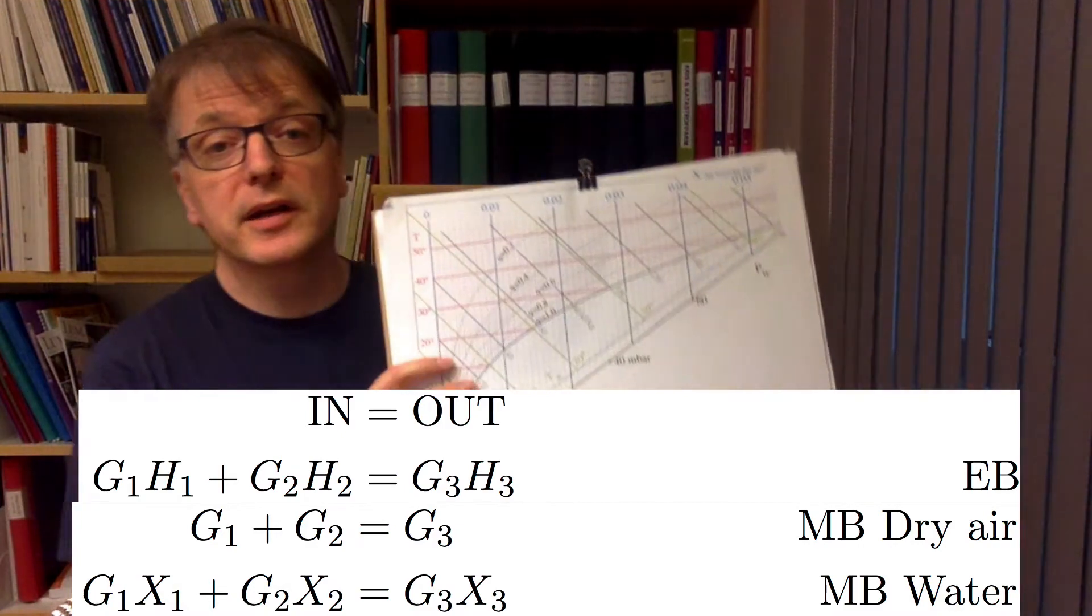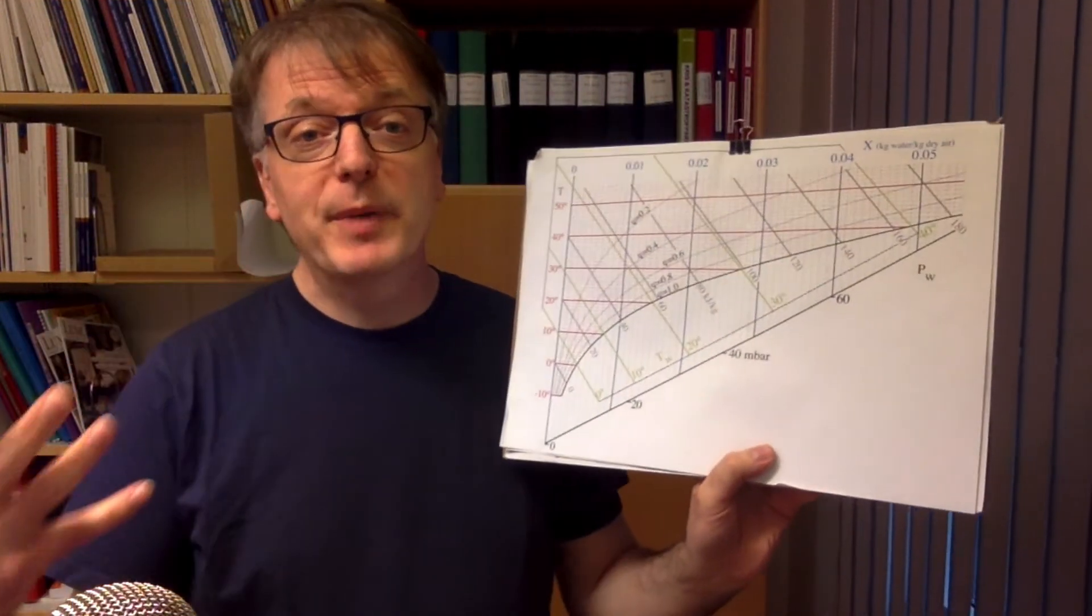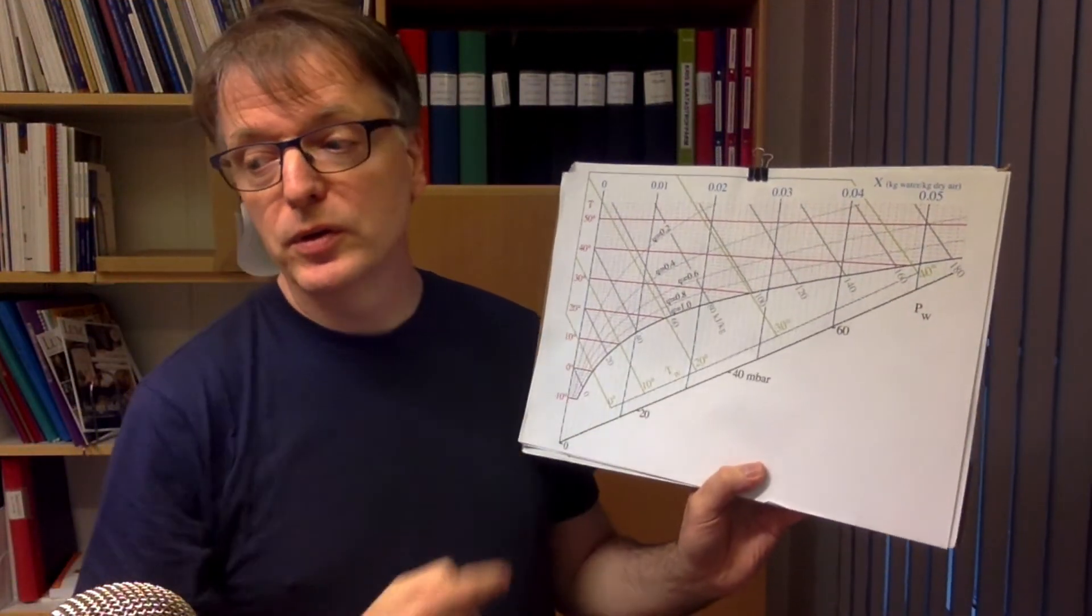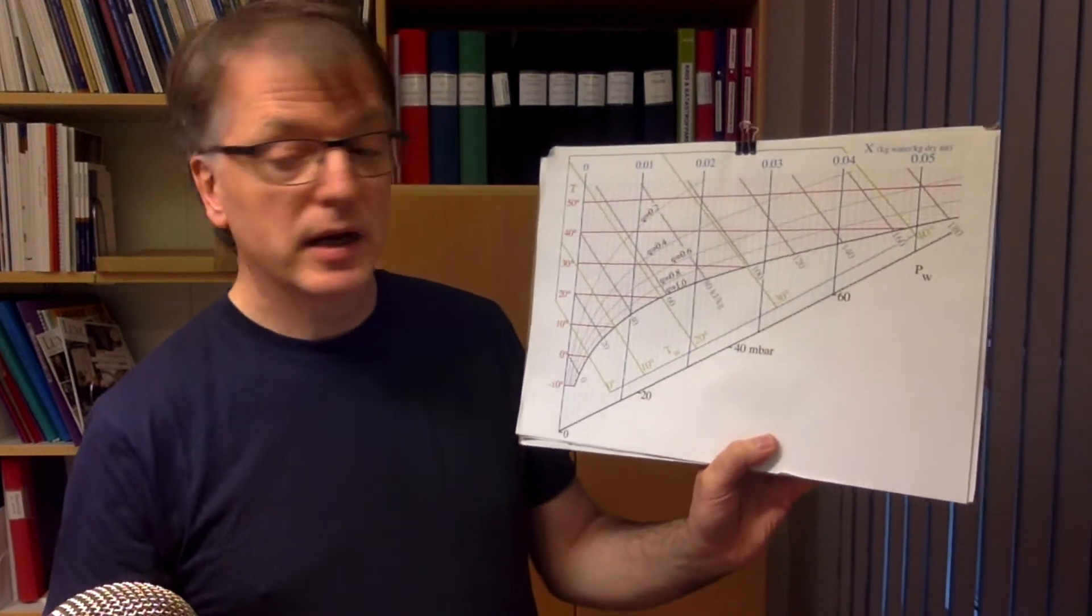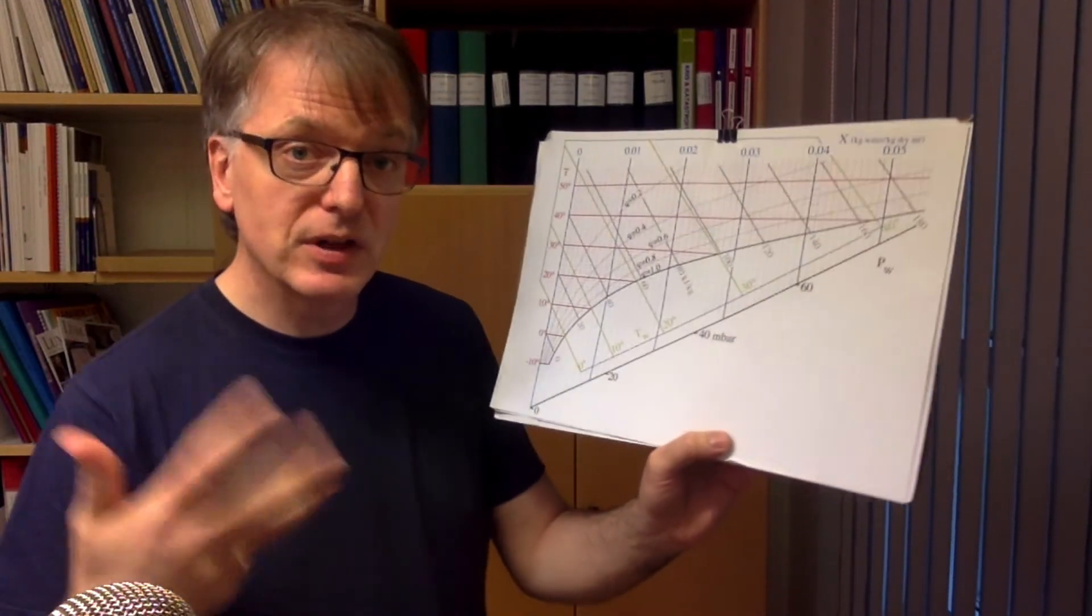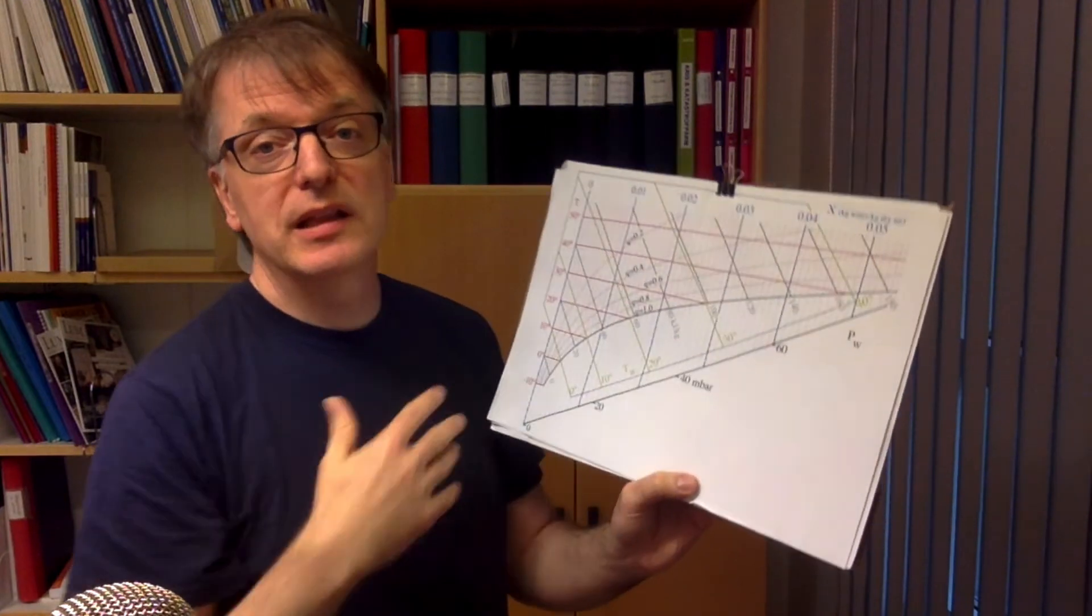A nice feature with the Mollier diagram is that if you have adiabatic mixing and you find the two points of the two air flows in the Mollier diagram, the solution, the result of the mixture, will be on a straight line between the two.